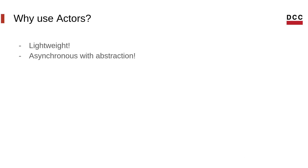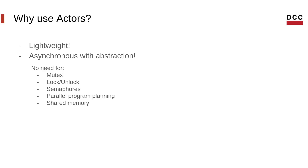Not only that, but the actor model is asynchronous by abstraction, so we don't need to use mutex, lock and unlock, semaphores, parallel program planning, or even memory sharing. That is important because these resources increase the complexity of our programs by a lot, make them much harder to manage, and create some incredibly complicated bugs from time to time. Having that asynchronous behavior already in your model helps a lot when creating systems that need to be asynchronous.